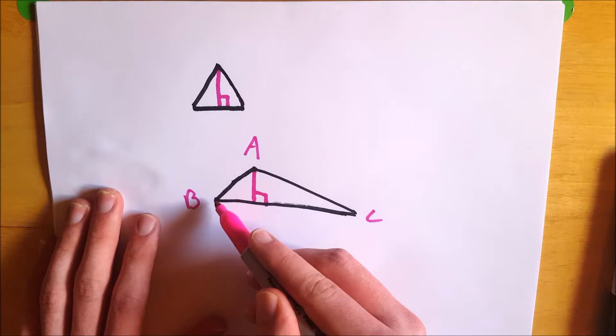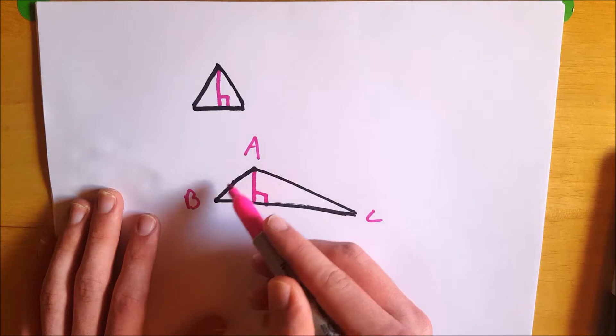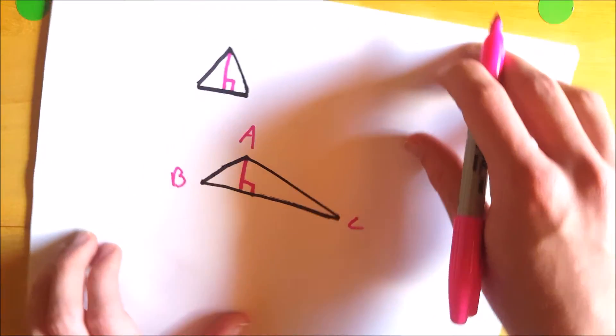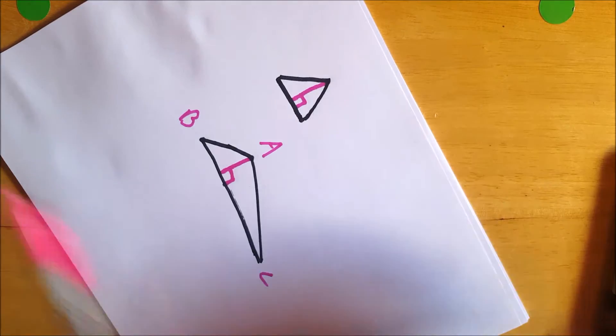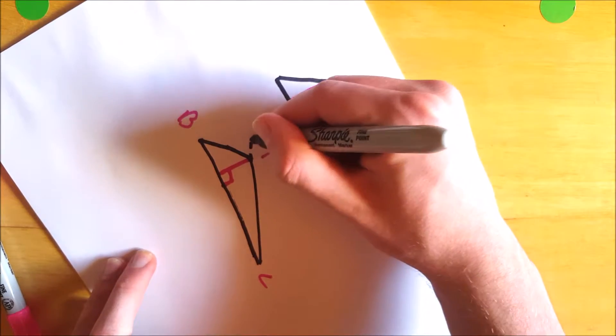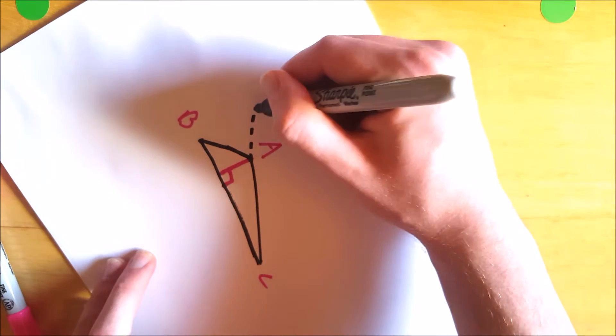But if we draw the altitude from this endpoint over here, this vertex, you can see, well, let's first extend this segment. I'm going to rotate the paper, don't do that often. Going to extend this side with a dotted line, something like that.